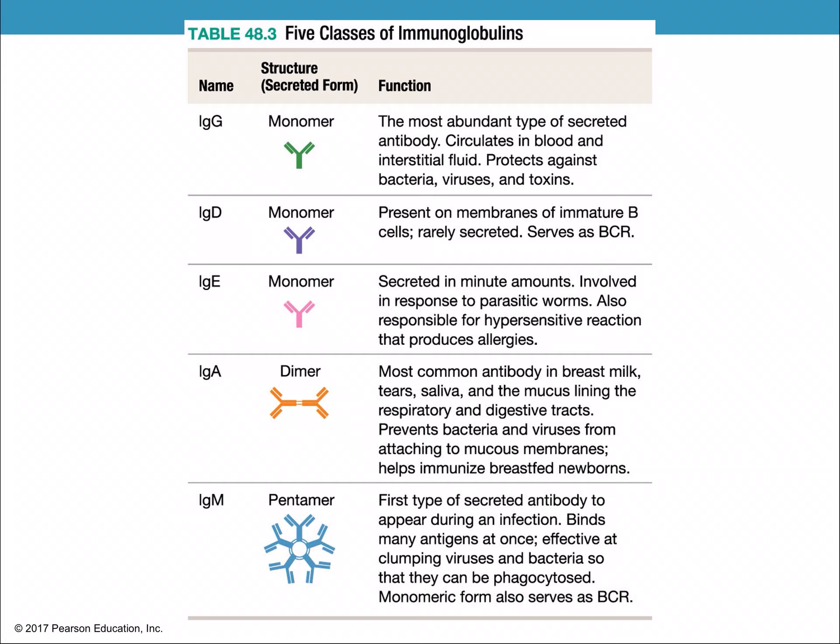IgG antibodies are the most abundant secreted antibody. They circulate in blood and protect against bacteria, viruses, and toxins. If you hear about an immune response generated by a vaccine, it's producing these IgG antibodies. IgD is present in the membranes of immature B cells, rarely secreted, and serves as a B cell receptor.